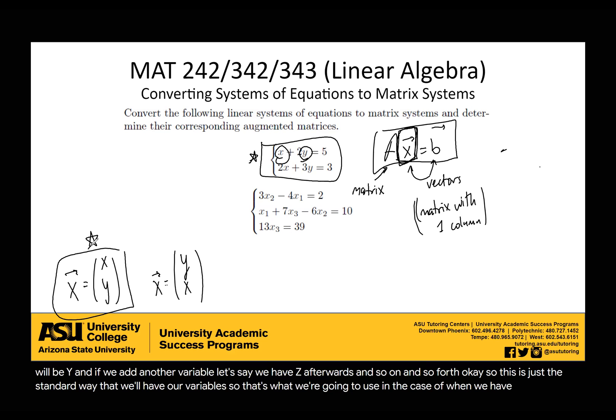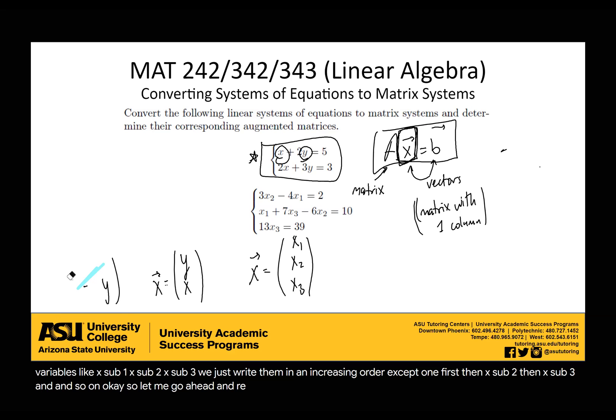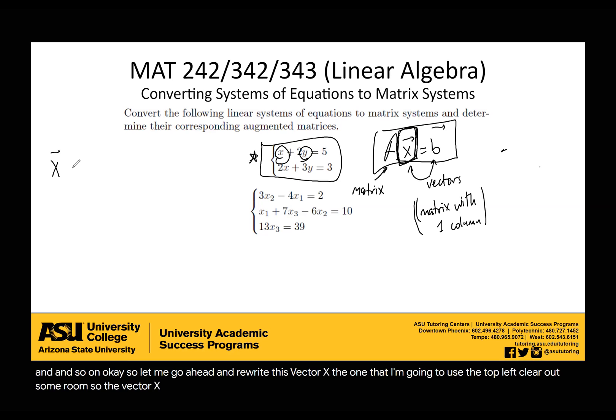In the case when we have subscripted variables, like x sub 1, x sub 2, x sub 3, we just write them in increasing order: x sub 1 first, then x sub 2, then x sub 3, and so on. Let me go ahead and rewrite this vector x. So the vector x that I'm choosing to use is going to be [x, y].